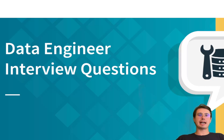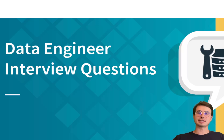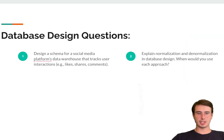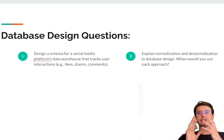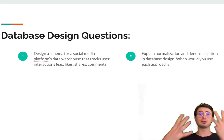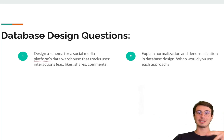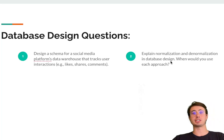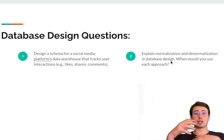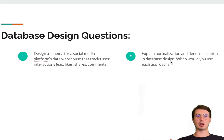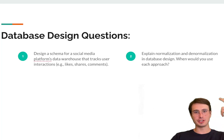For a database design question, you're going to be asked things like: design a schema for a social media platform's data warehouse that tracks user interactions — likes, shares, comments. Here you want to talk about what would be an efficient way to store this, what kind of primary and foreign keys you would use, what kind of schema — star or snowflake — and really tailor that schema to the particular use case. In this case, user transaction data is going to be a write-heavy database. You want to design it like a transactional database — just tracking all these user interactions coming in a standardized form. Another question could be: explain normalization and denormalization in databases. When would you use each approach? Talk about the benefits of normalized versus denormalized data and what use cases each is best appropriate for. The key is the 'why' — that's what they want to hear: how does your brain work in these situations?